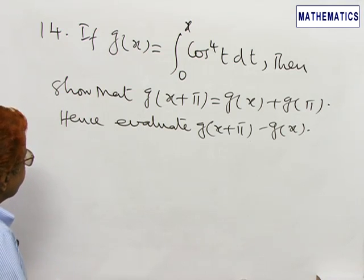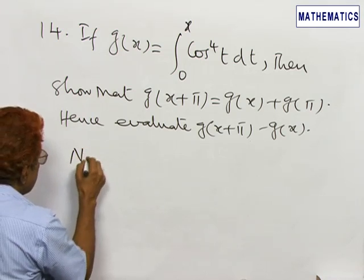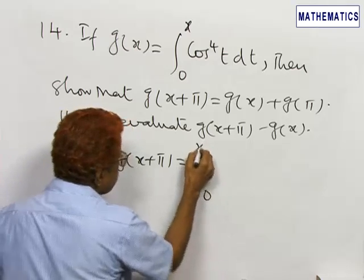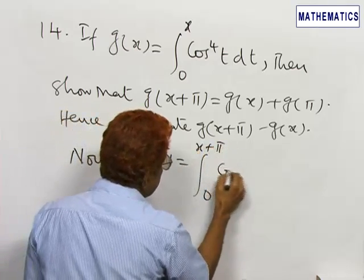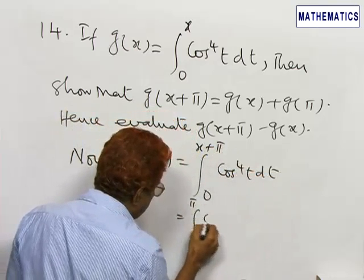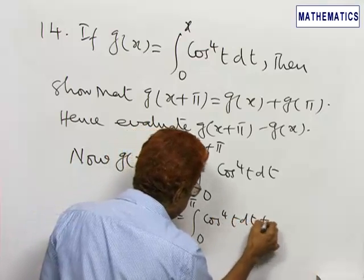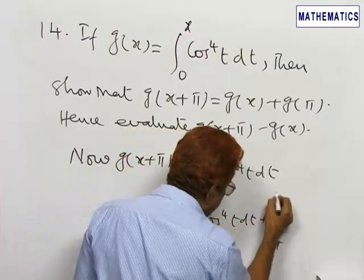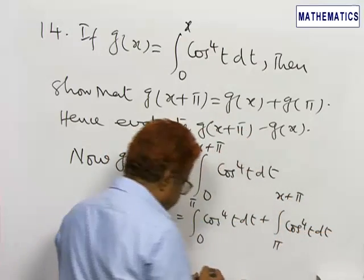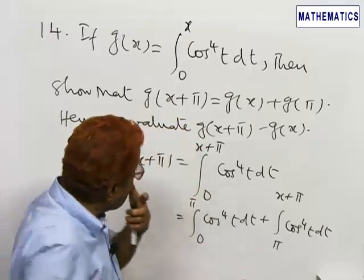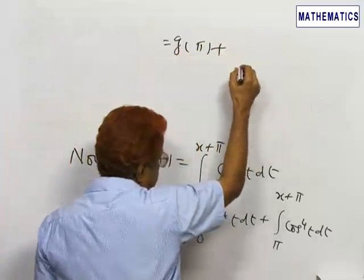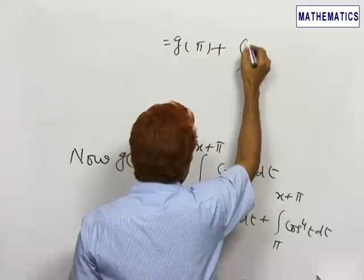Now g(x + π) is the integral from 0 to x + π of cos to the power 4 of t dt, which is the integral from 0 to π of cos⁴ t dt plus the integral from π to x + π of cos⁴ t dt. That is equal to g(π) plus the integral from 0 to x of cos⁴ t dt.